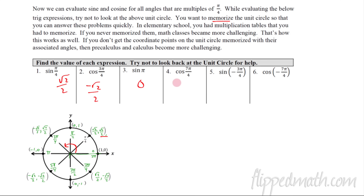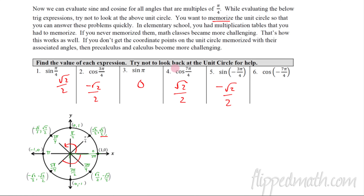Let's do some more together. Cosine of 7π/4: that's down in the fourth quadrant, so cosine is √2/2. Sine of −3π/4: going negative, −π/4, −2π/4, −3π/4 is the same as 5π/4, so the sine (y-value) is −√2/2. Cosine of −7π/4: counting seven steps back lands you at the same spot as π/4, so the cosine is √2/2. Not too difficult, but it does require memorization.